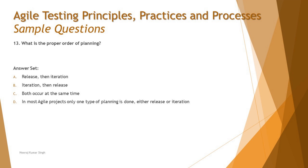In that context, all they're asking is what is the right order of planning as per the given options. We have four options: Option A says release then iteration; Option B says iteration then release; Option C says both occur at the same time; and Option D says in most agile projects only one type of planning is done — either release or iterations.